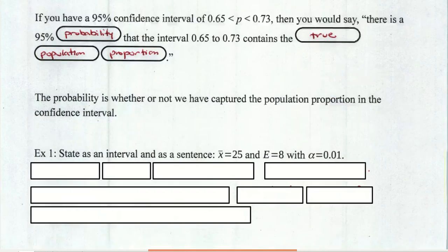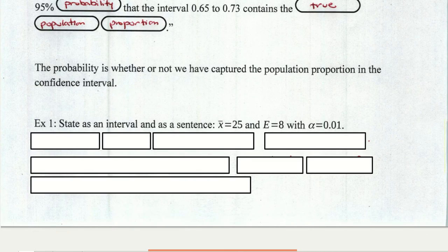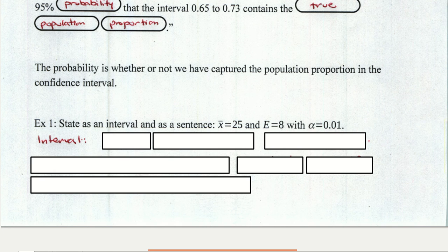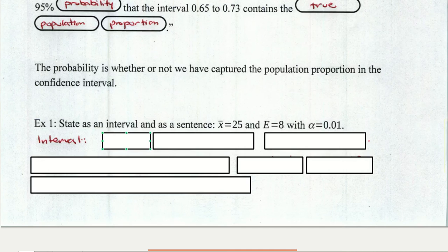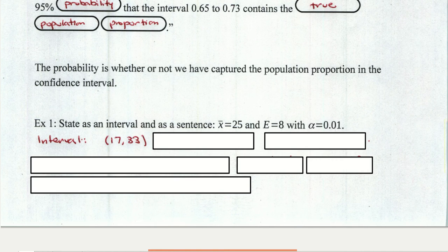So here's another example. State as an interval and as a sentence. We've got X bar equals 25. So here we're talking about a sample mean. The margin of error is 8 and alpha is 1%. So the first thing that we're asked to do is state as an interval. So as an interval, we'd probably state that exactly the way you'd expect. We'd take that 25 and add and subtract 8. So 25 minus 8 gives us our lower bound 17 and 25 plus 8 gives us our upper bound 33.